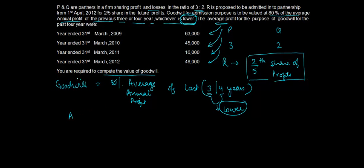Since goodwill is based on average annual profits for the last three or four years, I first need to calculate what is the average profits. So average profits for three years and four years. Let's say we calculated for three, so that means we'll need for 2012, 2011, and 2010: 48,000, 16,000, and 45,000.